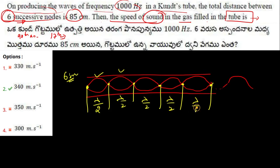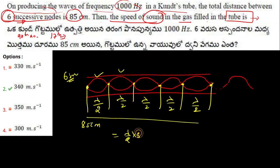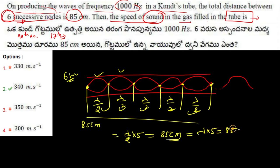Each node spacing is lambda upon 2 — same for each one. Now if I consider the total distance, which is given as 85 cm, it means that lambda upon 2 multiplied by 5 times — that is 1, 2, 3, 4, 5 — equals 85 centimeters. So lambda times 5 equals 85 times 2.